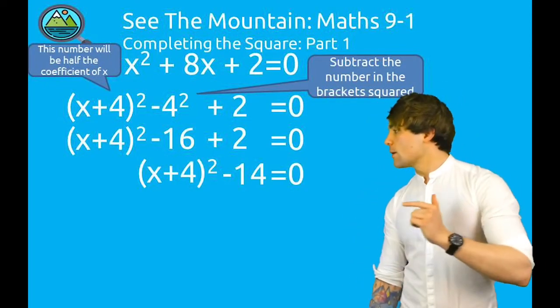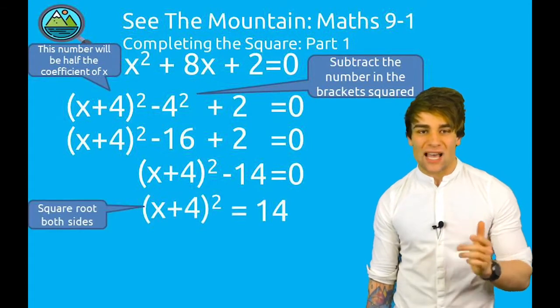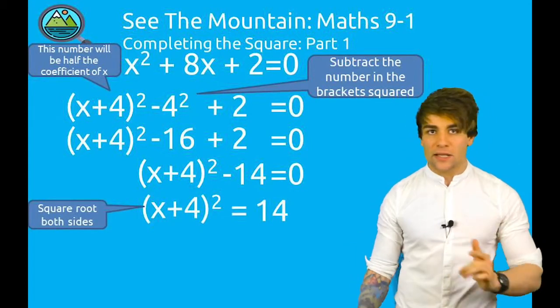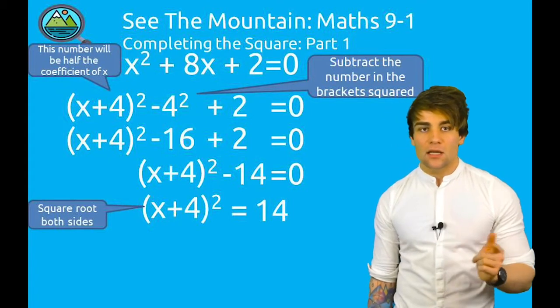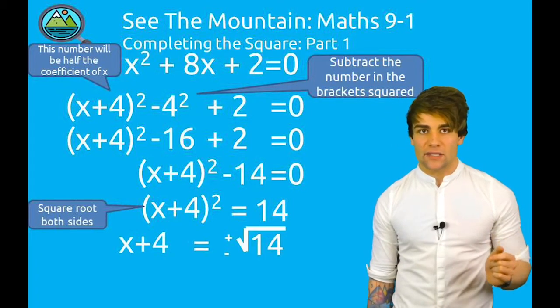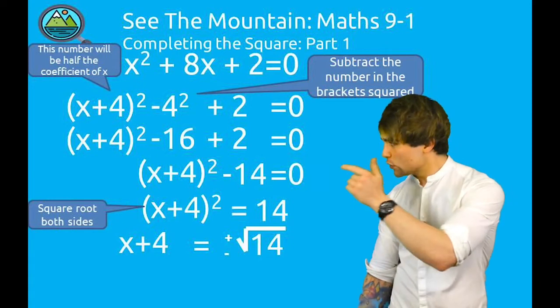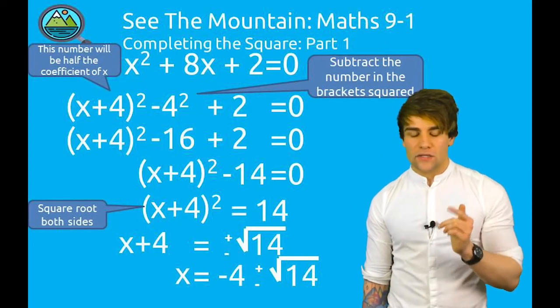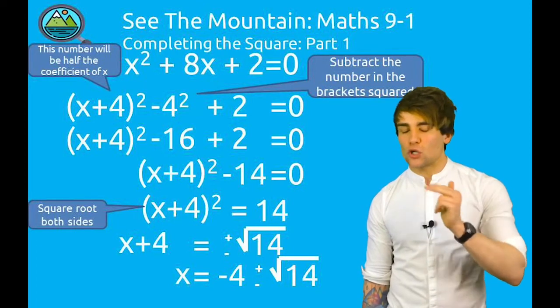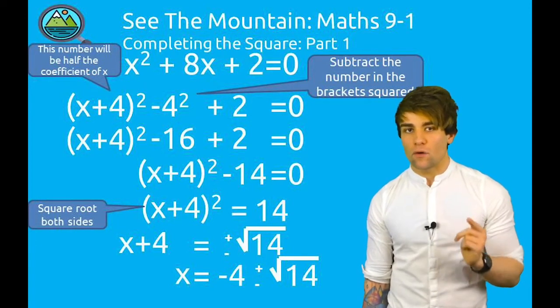Let's find the solution for x. -14 goes across to the other side as we add 14 to both sides. We have (x + 4)² = 14. Next step, square root both sides. x + 4 = ±√14. Let's not forget that final step now. x = -4 ± √14.